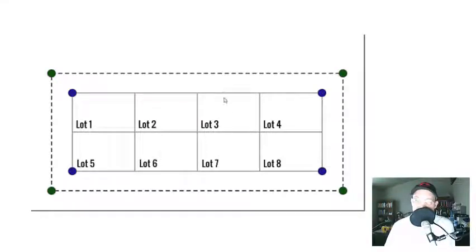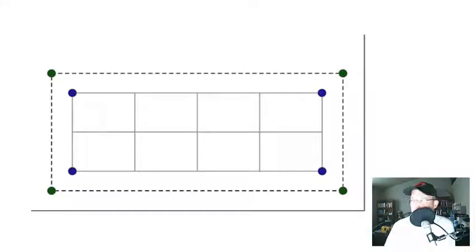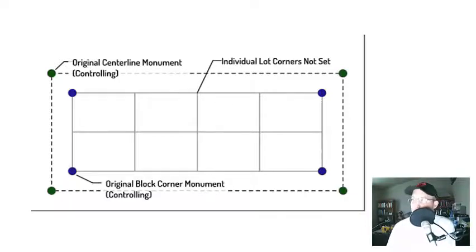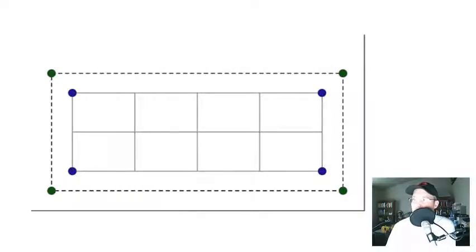Now let's fast forward in time about 20 years. Let me show you these labels before we do. This is an original centerline monument — it's controlling. This is an original block corner monument — it's controlling. And these are individual lot corners that were not set and not marked on the subdivision map, but they're still original corners even though they weren't marked. Brown's makes that point in chapter two. So let's fast forward 20 years to when the very first retracement survey comes in on lots one and two.